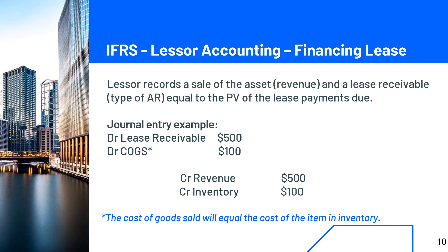Cost of goods sold will equal the cost of the item in inventory — the lessor is probably in the business of renting things out, so the items they're renting is their inventory. As shown on the slide, the journal entries are: debit lease receivable for $500 and debit cost of goods sold for $100, then credit revenue for $500 and credit inventory for $100.